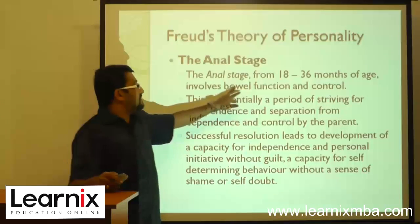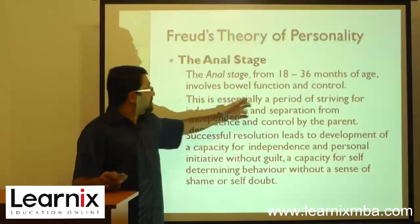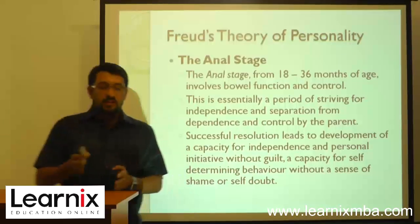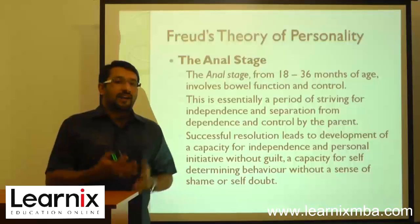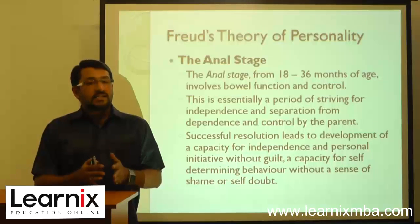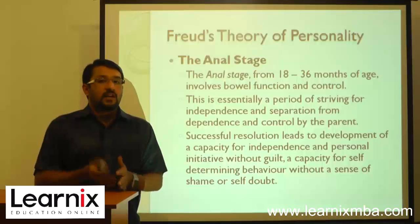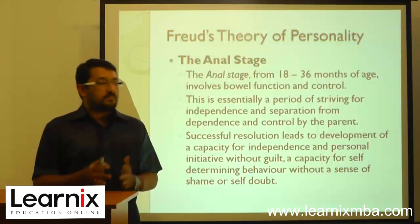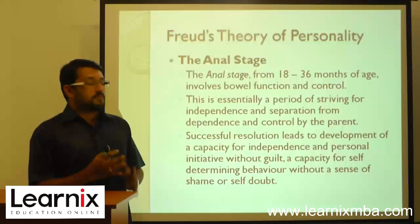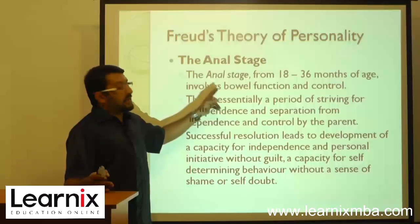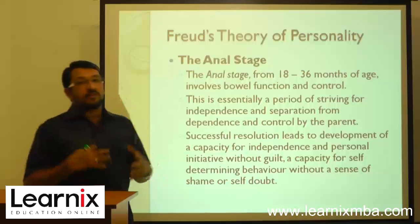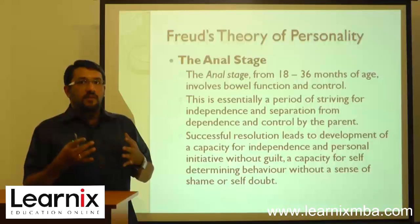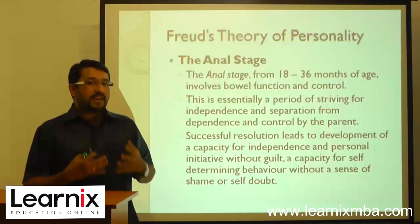The next stage is called the anal stage. The anal stage starts from 18 to 36 months of age and involves bowel function and control. Until the age of 18 months, bowel movements are not in control of the child — the body does it automatically, which is why diapers are used. From 18 to 36 months, the body tries to find an equilibrium so the child begins to know when bowel movements are happening.